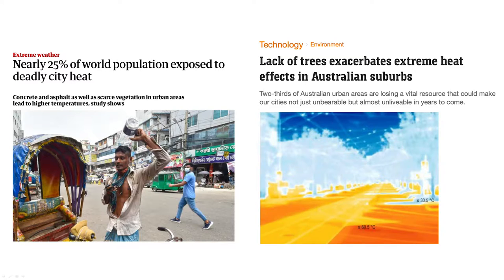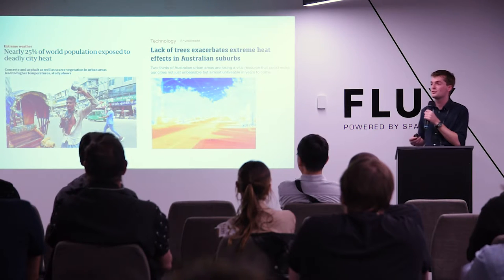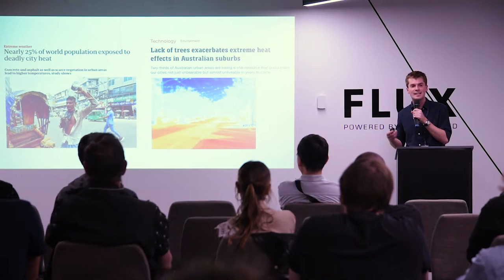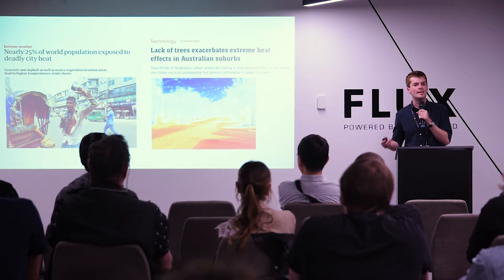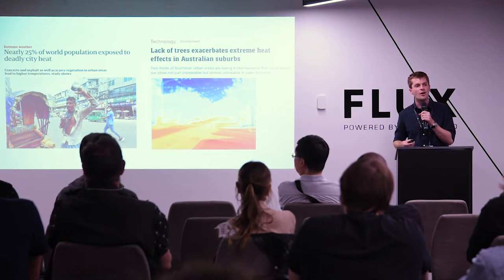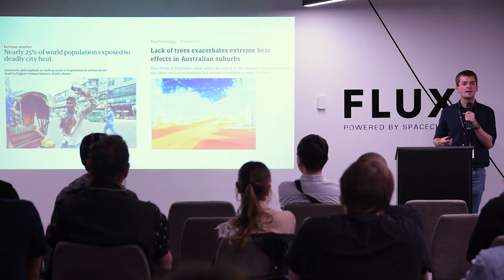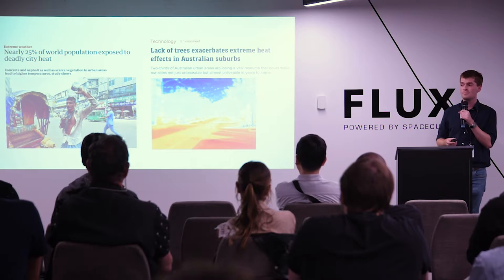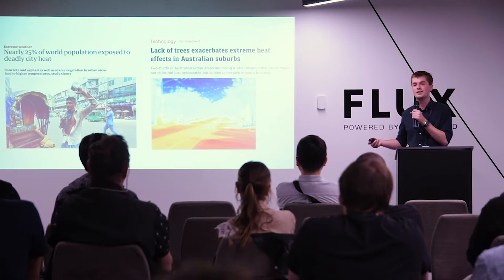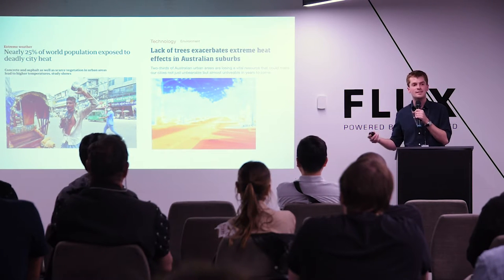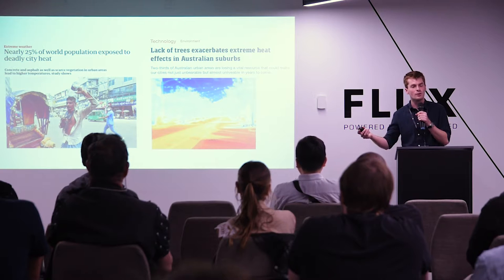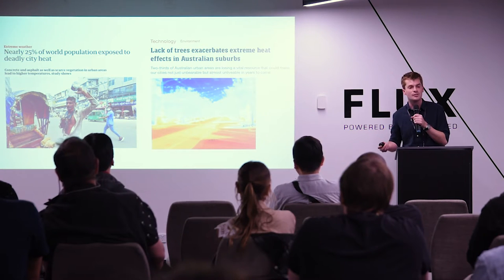To begin, I want to briefly touch on the importance trees play within the built environment. Urban tree canopy cover is one of the best defenses we have against rising temperatures in our cities and suburbs. This is of course being driven by climate change, but it's exacerbated by something known as the urban heat island effect, where an overabundance of surfaces such as concrete and asphalt trap and retain heat and elevate those temperatures further.